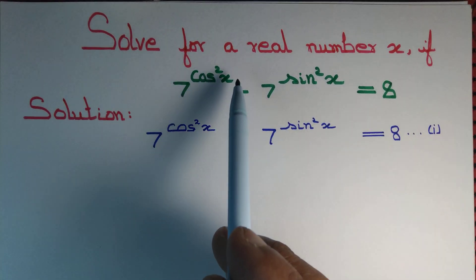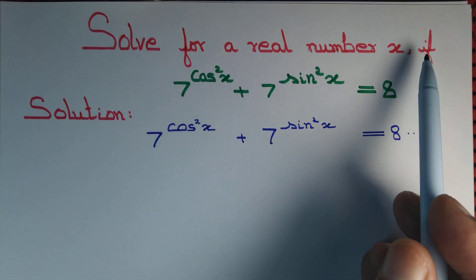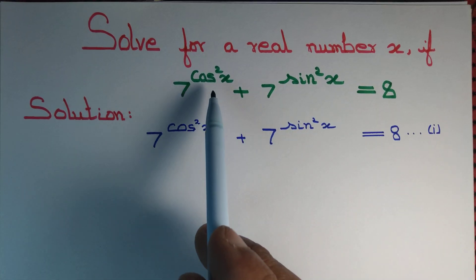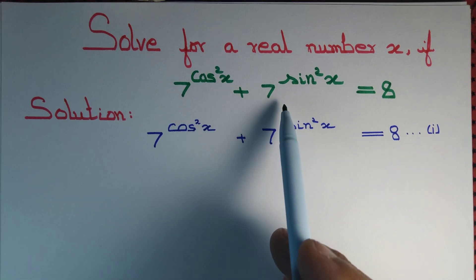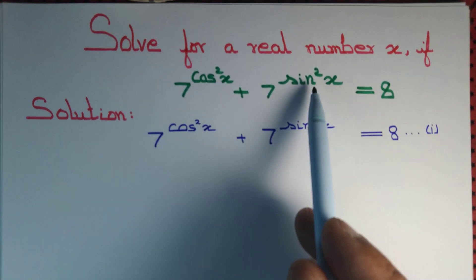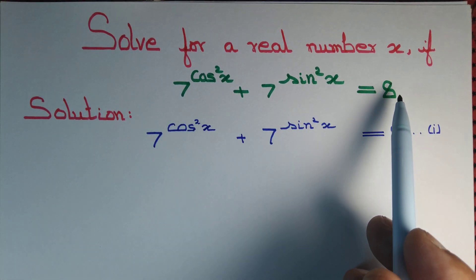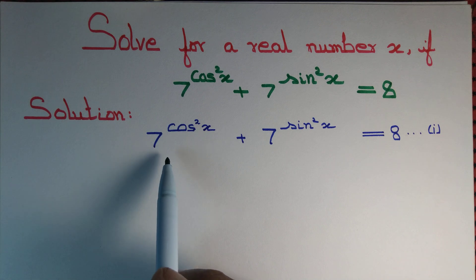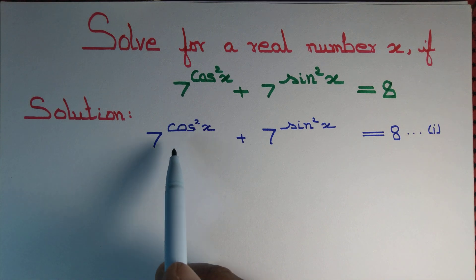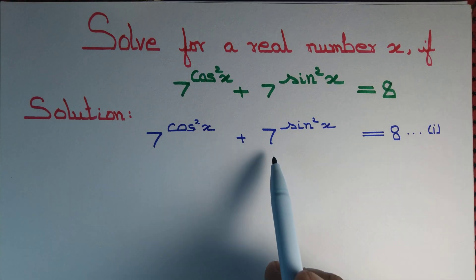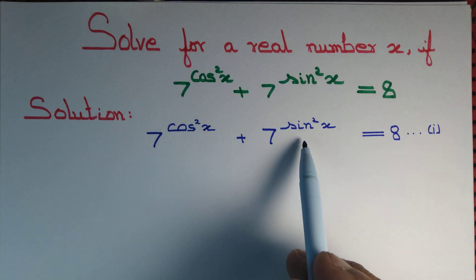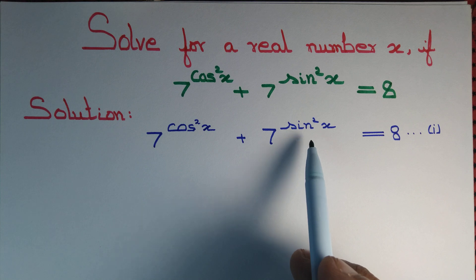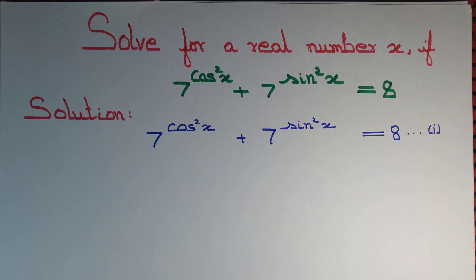Let us solve for a real number x. We are given the equation 7 to the power cos squared x plus 7 to the power sine squared x equals 8. We know that cos squared x plus sine squared x equals 1.